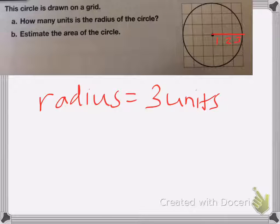Now for part b, we need to estimate the area of the circle. That just means it wants us to count how many square units are inside my circle. So we're first going to count up the whole squares, the ones that are almost all the way there.